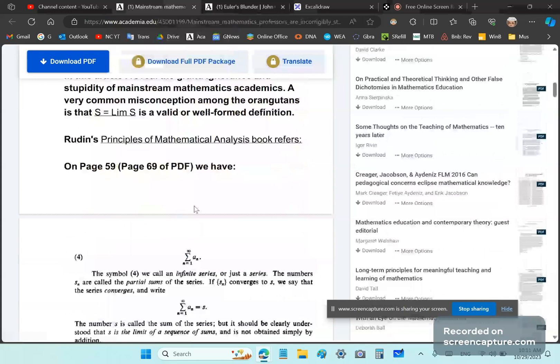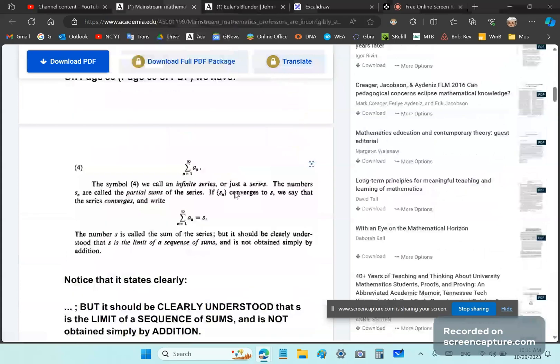So he says, the symbol, we call an infinite series, or just a series. So this is called just a series. It doesn't matter that you call it an infinite series. It doesn't mean it's infinite. I can call something by an attribute that it doesn't have. It doesn't mean that it has that attribute. So the numbers Sn are called the partial sums of the series. If Sn converges to S, we say that the series converges, and we write that this expression is equal to S.